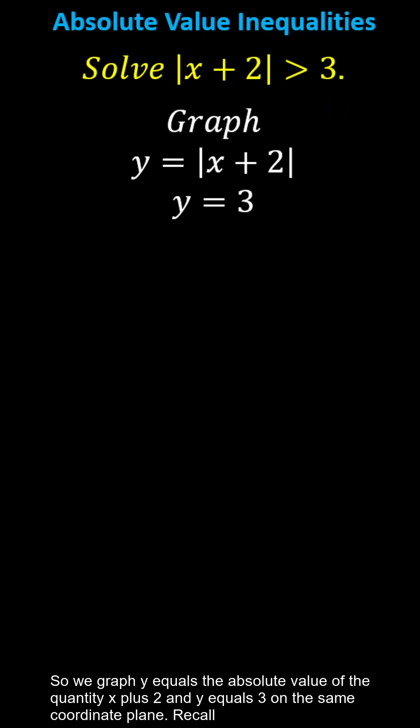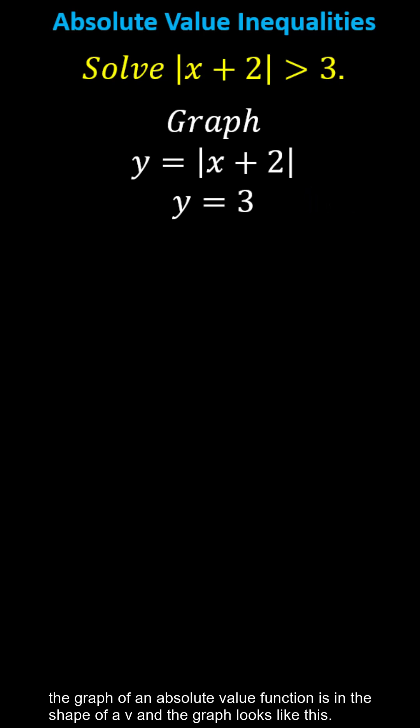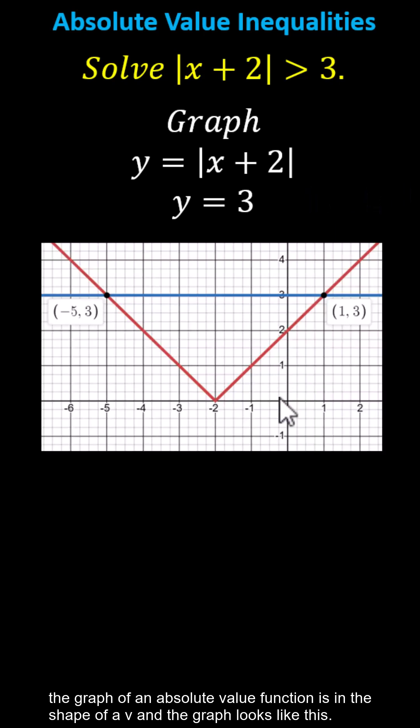So we graph y equals the absolute value of the quantity x plus 2 and y equals 3 on the same coordinate plane. Recall the graph of an absolute value function is in the shape of a v and the graph looks like this.